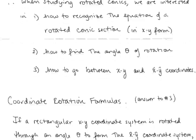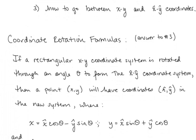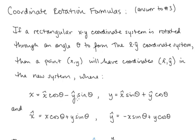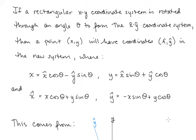Let's start with the answer to number 3: how to change between the coordinate systems. If a rectangular x-y coordinate system is rotated through an angle of theta to form the x-hat, y-hat coordinate system, then a point x-y will have coordinates x-hat, y-hat in the new system where x = x-hat·cos θ − y-hat·sin θ, y = x-hat·sin θ + y-hat·cos θ, x-hat = x·cos θ + y·sin θ, and y-hat = −x·sin θ + y·cos θ.